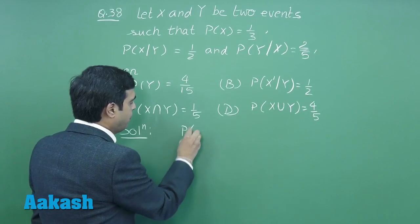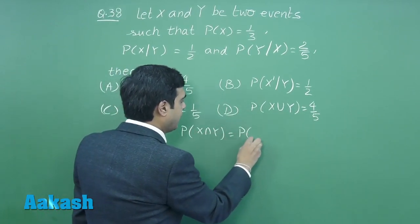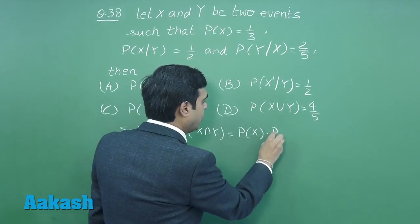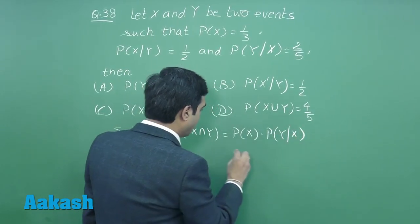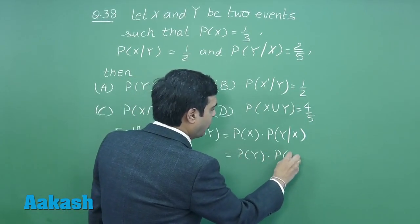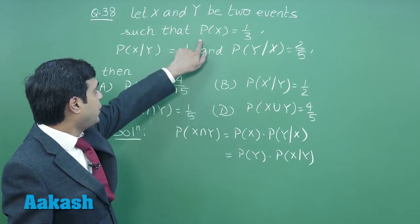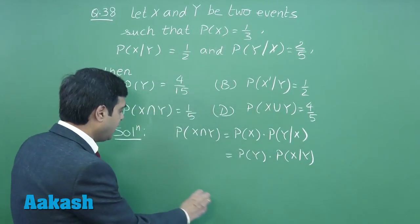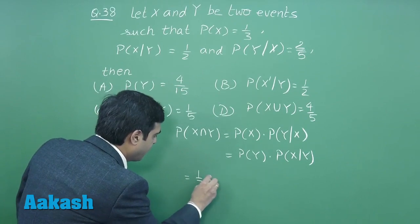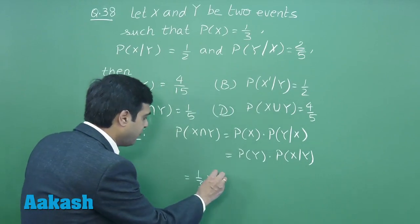We know that P(X ∩ Y) = P(X) × P(Y|X) or probability of Y into probability of X given Y. Now probability of X is given as 1/3, probability of Y given X is given to me as 2/5.